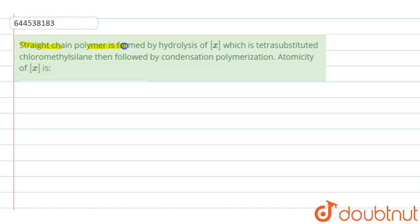Straight chain polymer is formed by hydrolysis of x which is tetrasubstituted chloromethylsilane, then followed by condensation polymerization. Atomicity of x we have to find out. So first of all, we'll see what is x.